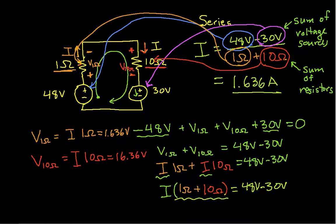We've done it by starting at some arbitrary point in the circuit, going all the way around the loop, applying KVL, and then solving for the current. This technique applies whenever you have voltage sources in series with resistors. I think we'll let that be the end of this video on single loop circuits. Thanks for watching.